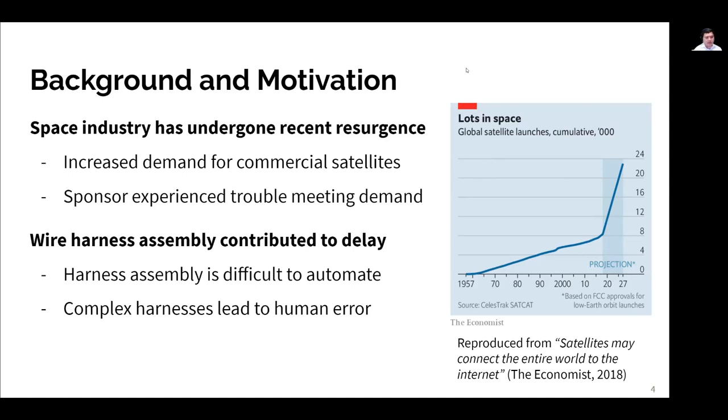One of the major causes of delays in this process was traced back to wire harness assembly. Historically, wire harness assembly has been difficult to automate due to challenges in manipulating flexible wires with robotic arms. As a result, wire harnesses are mostly assembled by hand and the complexity of these harnesses leads to a high rate of human error.